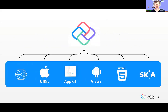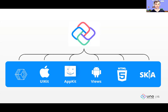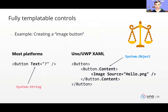For rendering, Uno UI uses the native rendering capabilities of each platform. On Windows, it's just WinUI. On iOS, it uses UIKit. On macOS, AppKit. On Android, Android Views. On WebAssembly, HTML and CSS. For other targets — Tizen, WPF, and GTK — it uses SkiaSharp for rendering. So Uno Platform supports both platform-specific rendering and direct rendering using SkiaSharp, making it easy to add new build targets.